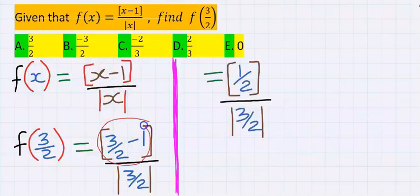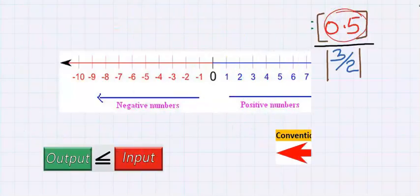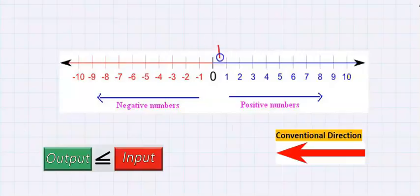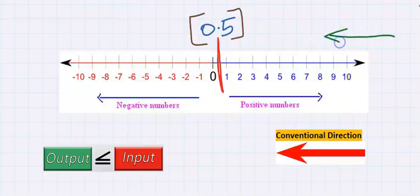If you solve the numerator carefully, you are going to get 1 over 2. Look for the greatest integer function: 1 over 2 is the same as 0.5. 0.5 is in between 0 and 1. The conventional direction of the greatest integer function is usually towards the left, and the output must be an integer. Since it must move towards the left, the next integer from 0.5 is 0. Hence, the greatest integer function of 0.5 is 0.